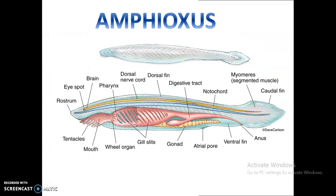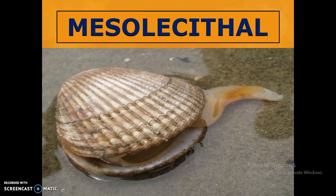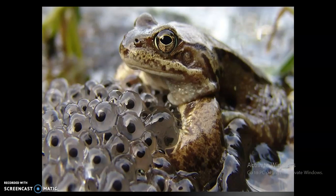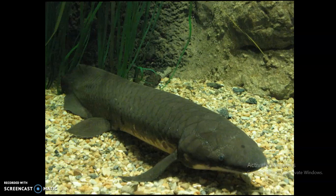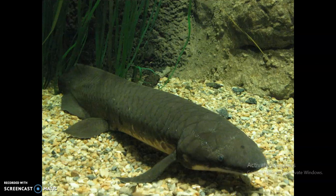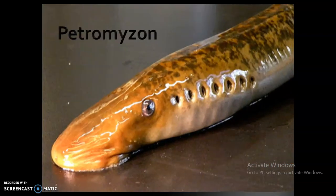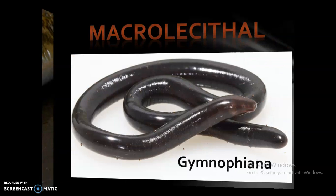Next, we have mesolecithal eggs. Eggs with a moderate amount of yolk are described as mesolecithal eggs. These mesolecithal eggs are seen in certain molluscs, amphibians, dipnoans, and petromyzon. The amount of yolk is moderate — medium or medial.